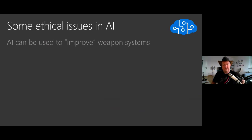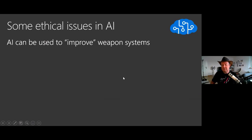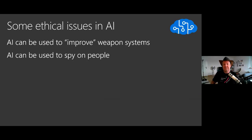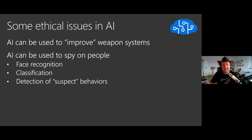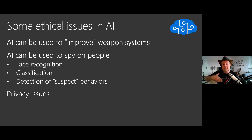Now let's talk about ethical issues, which is probably even more important. Some standard issues come with any technical innovation: AI can be used to improve weapon systems, but this is true of pretty much any system. AI can be used to spy on people — and yes, this is already the case, for example with facial recognition, detection of suspect behavior, which raises the question: who is suspect, and who decides? We also have privacy issues because we gather so much data, and we need to make sure it's gathered with the user's consent and that the user agrees to their data being used to train AI.